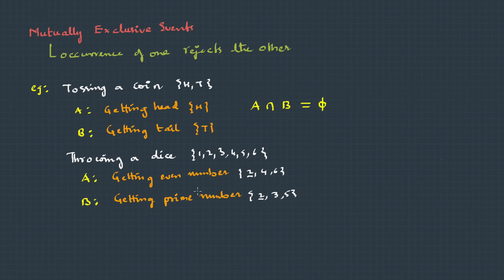If an outcome is possible in both the events, then they're not exclusive. Or in mathematical notation, we could say A intersection B will not be null. And here in this case, it's actually equivalent to 2.